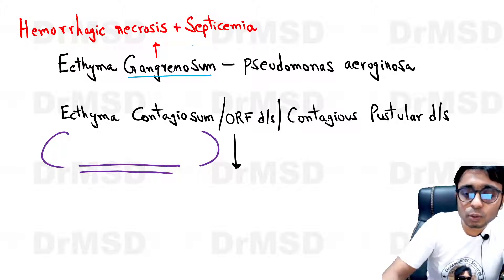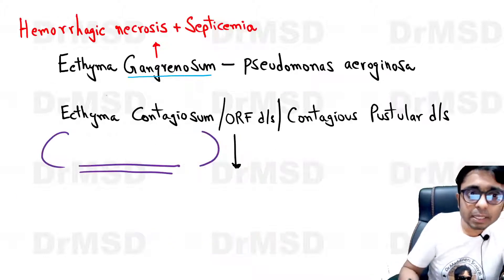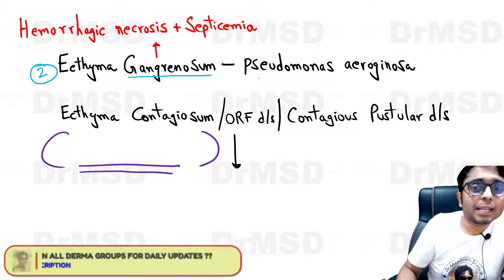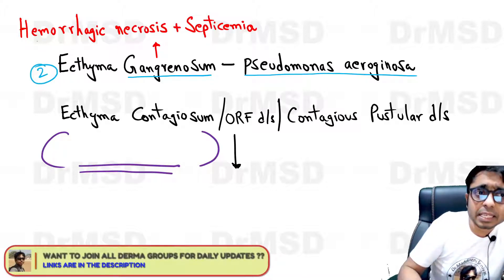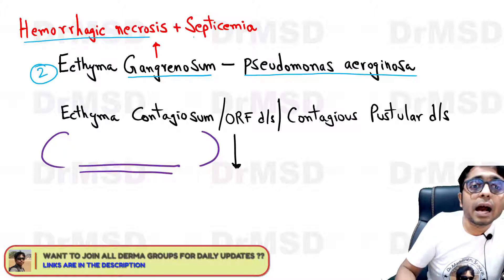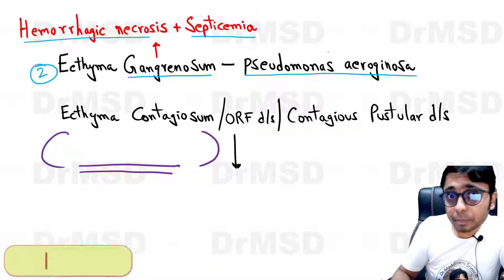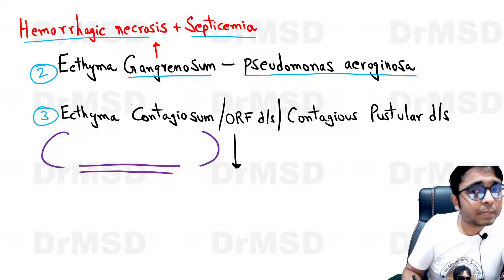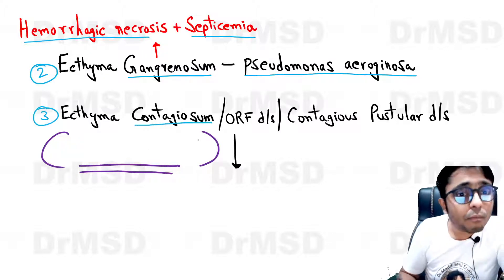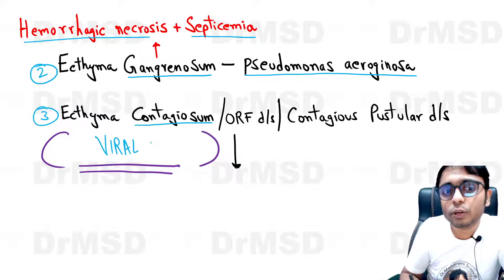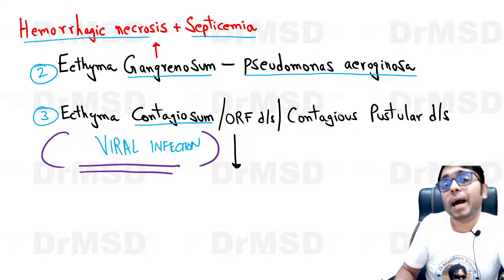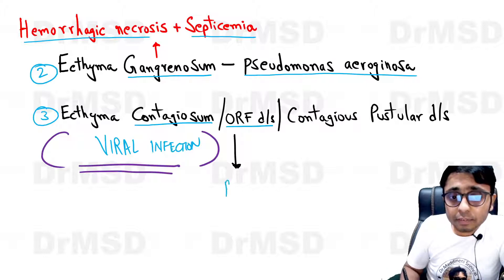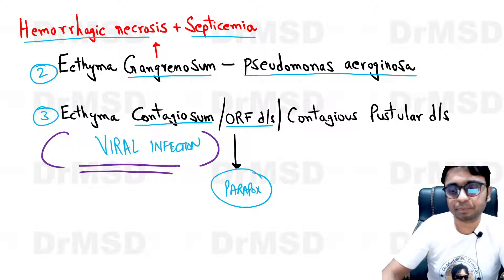The second type is ecthema gangrenosum, caused by Pseudomonas aeruginosa infection — also a bacterial infection — where there are hemorrhagic necrotic changes over the skin along with septicemia. The third type is ecthema contagiosum, which is a viral infection — very important to remember, it is not bacterial. It is due to parapox virus and is also called ORF disease.